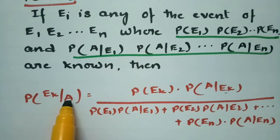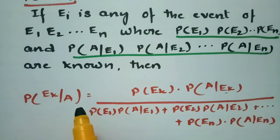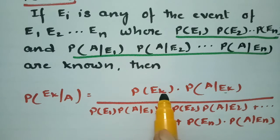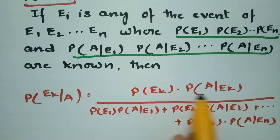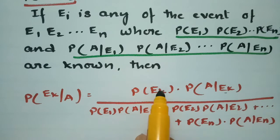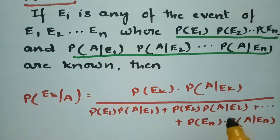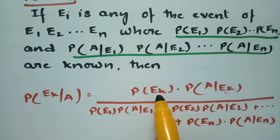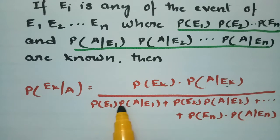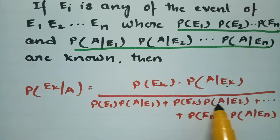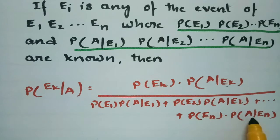Then we have to show: probability of EK given A is equal to — just reciprocal it — probability of A given EK into probability of EK. In the numerator and denominator EK is there, so you can cancel. This is an easy way to remember. If you keep K equal to 1 in the denominator: probability of E1 into probability of A given E1, plus probability of E2 into probability of A given E2, plus and so on, probability of EN into probability of A given EN.